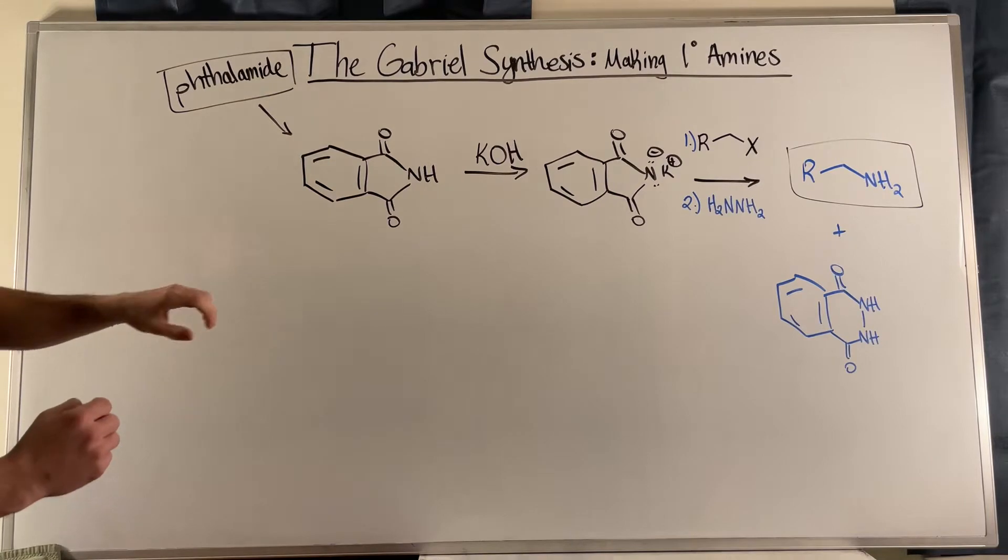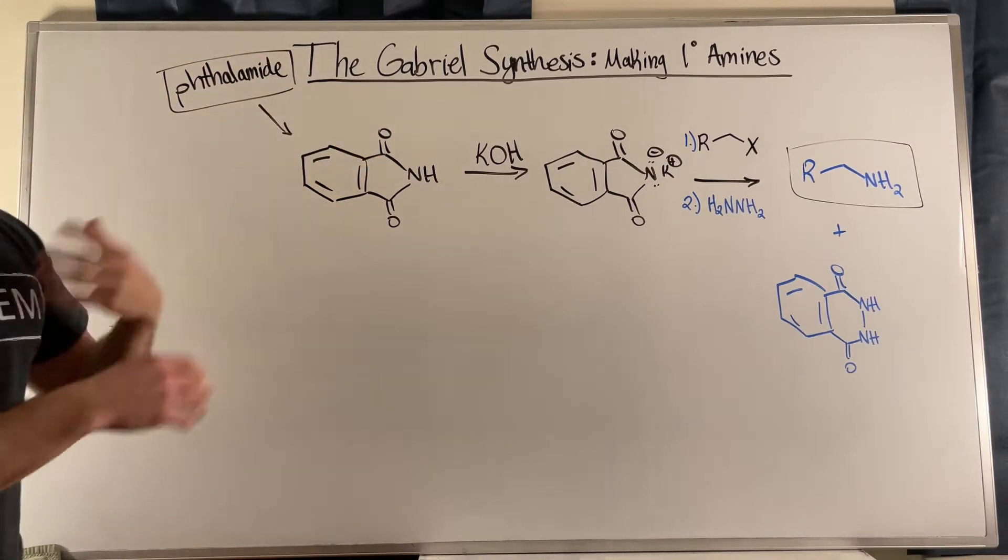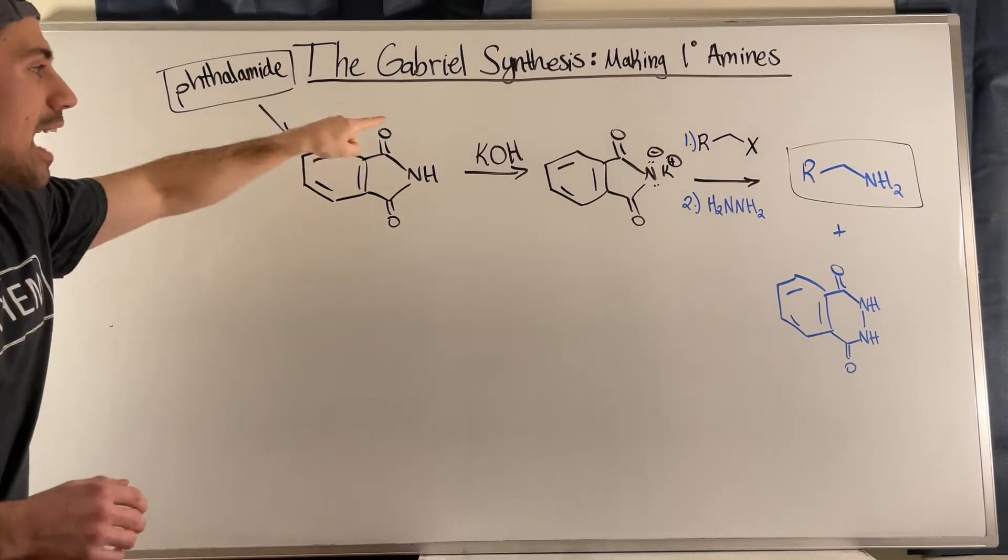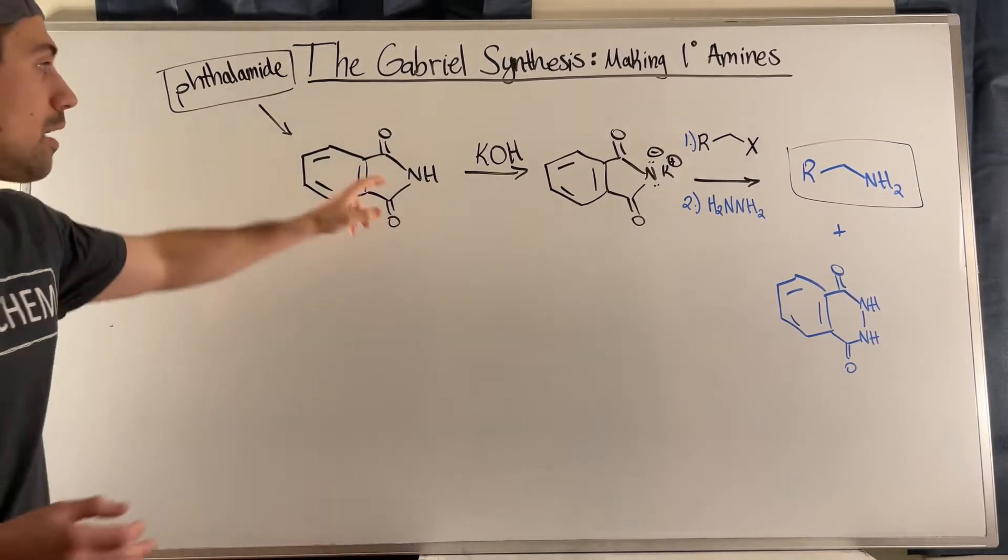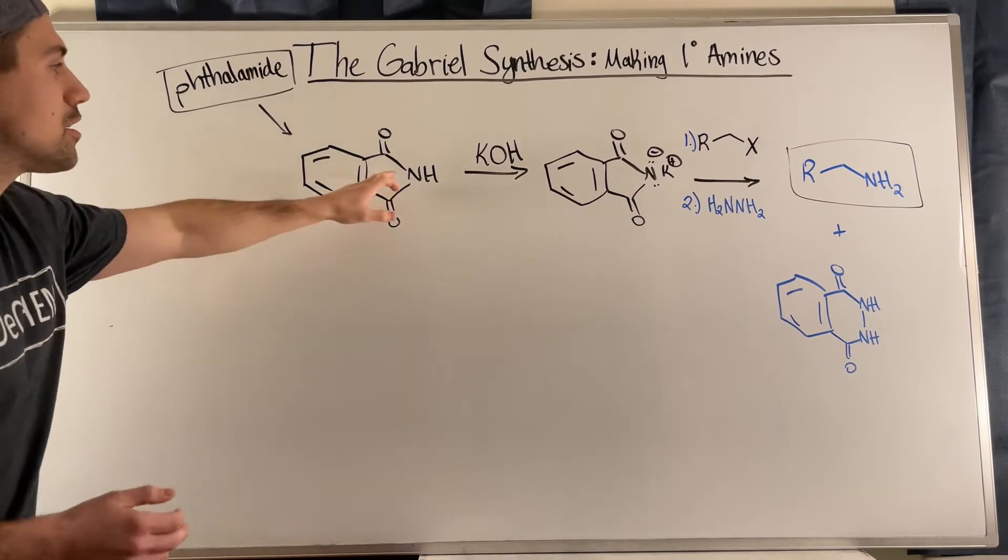And then at the very end, we can do kind of like a complete the reaction and maybe provide the reagent type question just to get a little bit of practice in with this Gabriel Synthesis. Okay, so if we take a look right here, the thalamine. What is great about it, since it is a diamine, thalamine is extremely or more acidic than your typical amine or anything like that.